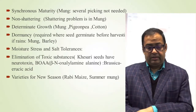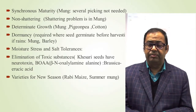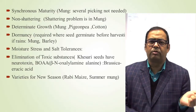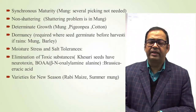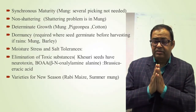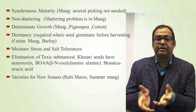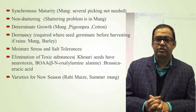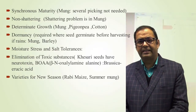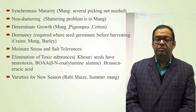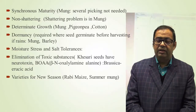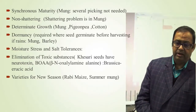Synchronous maturity is a very important objective of a breeder. Sometimes in mung, several pickings are required, but nowadays one or two pickings suffice to harvest a mung variety commercially. If crops mature and flower at the same time — synchronous maturity — a lot of labour can be saved and mechanized harvesting can be done.